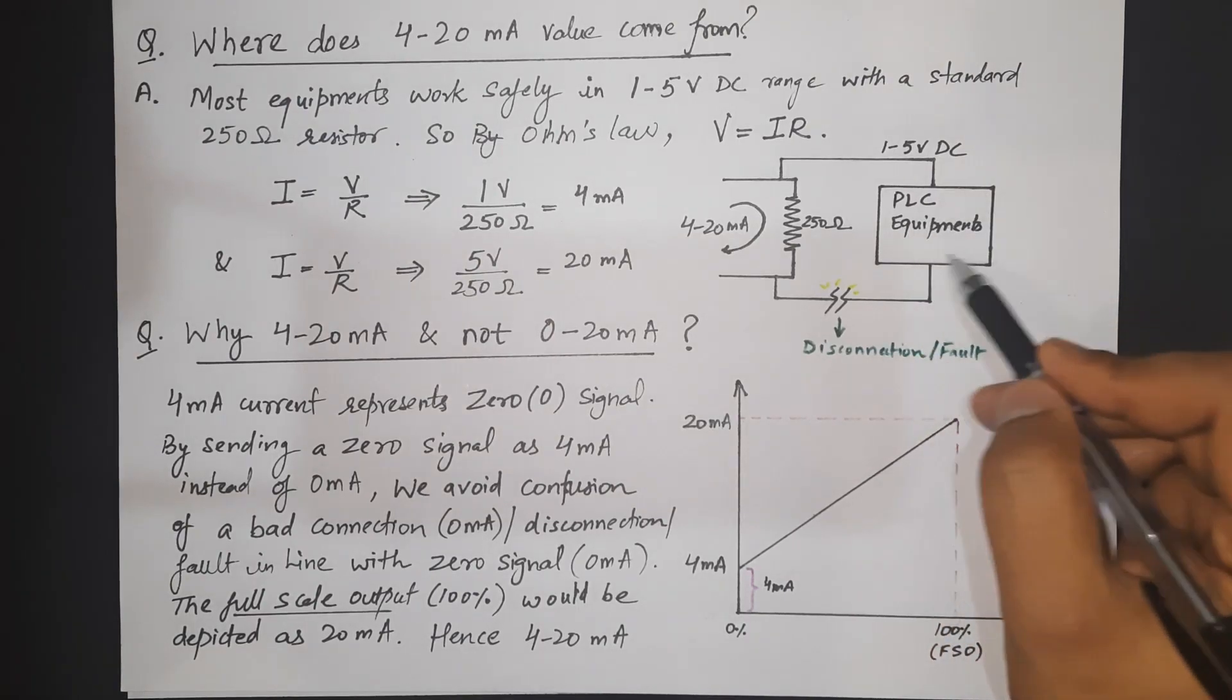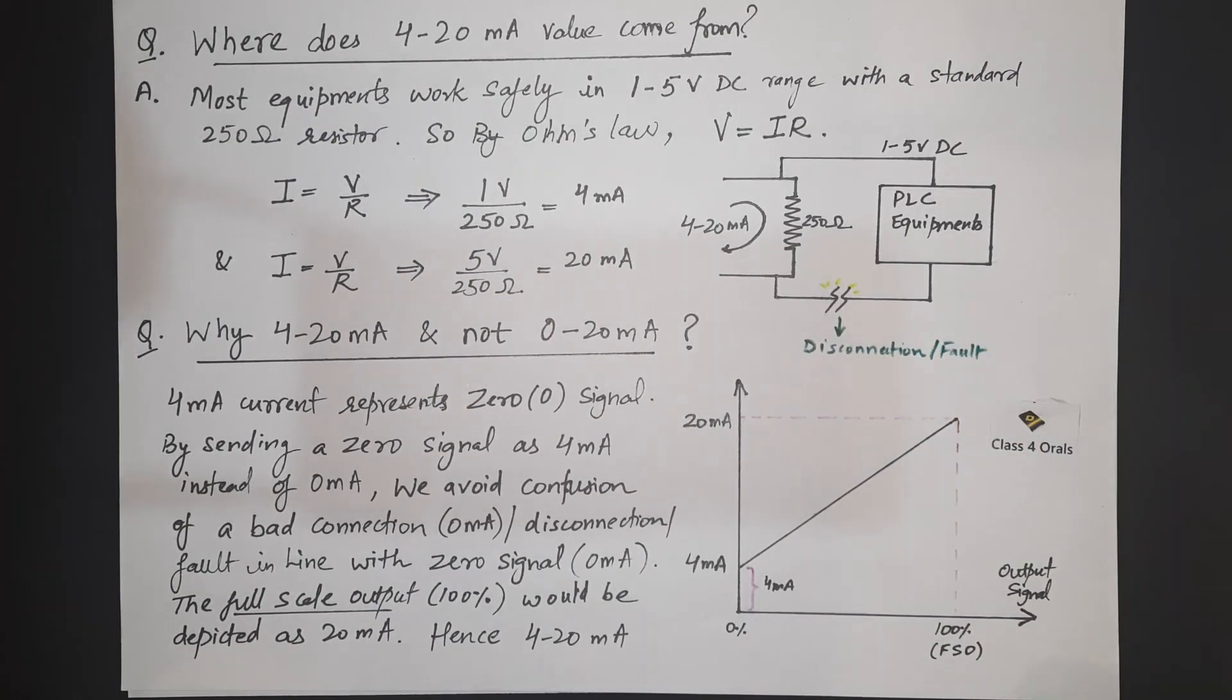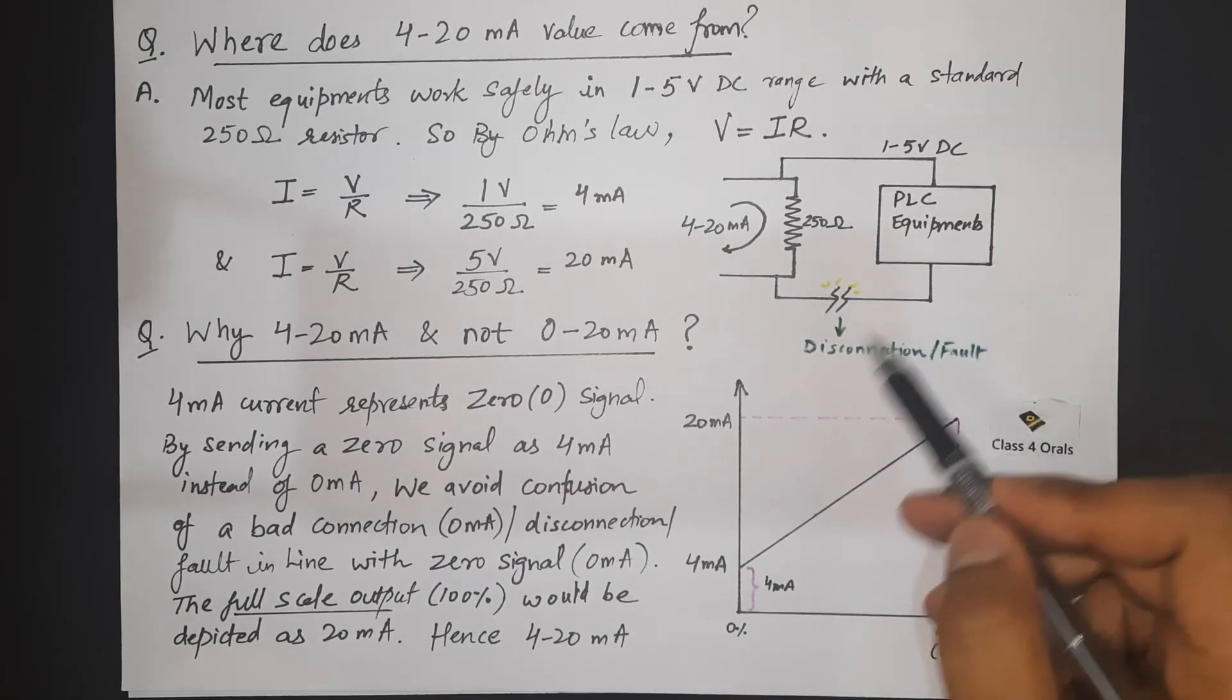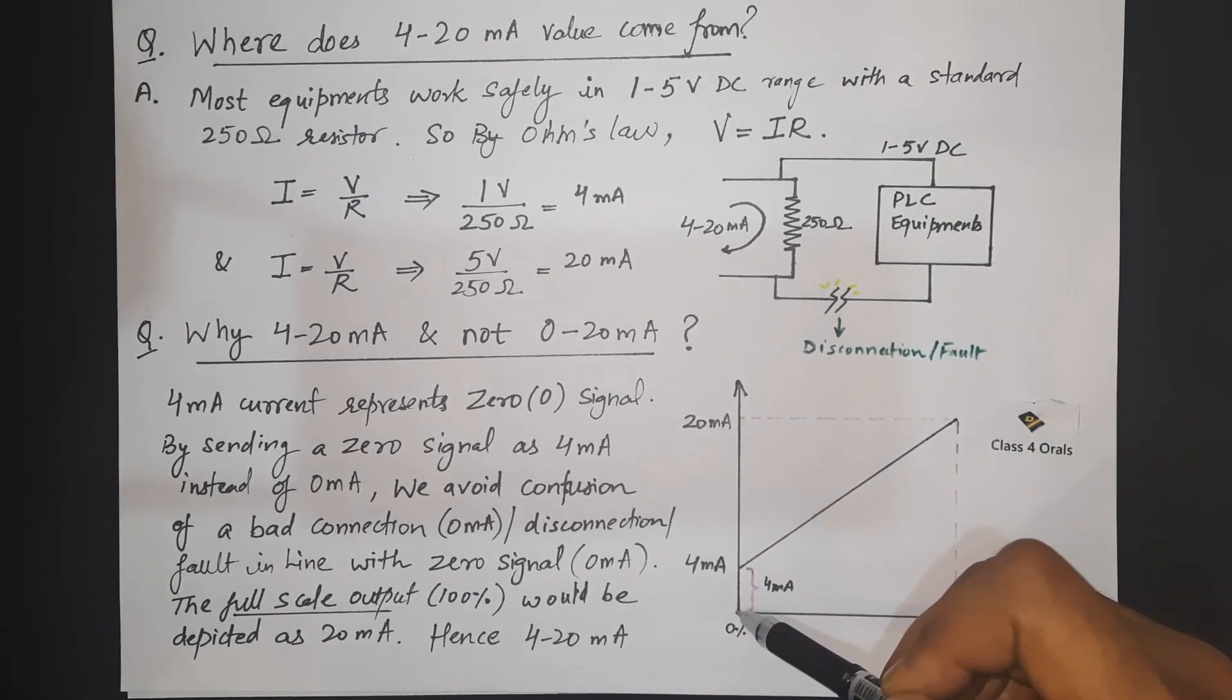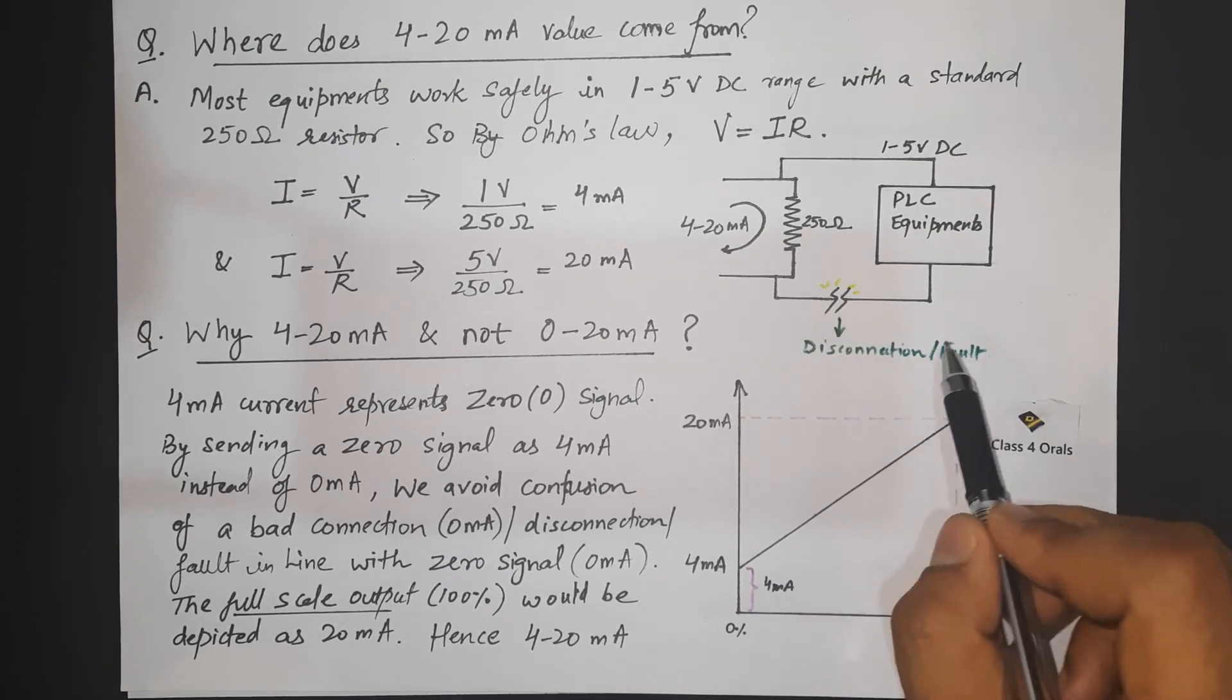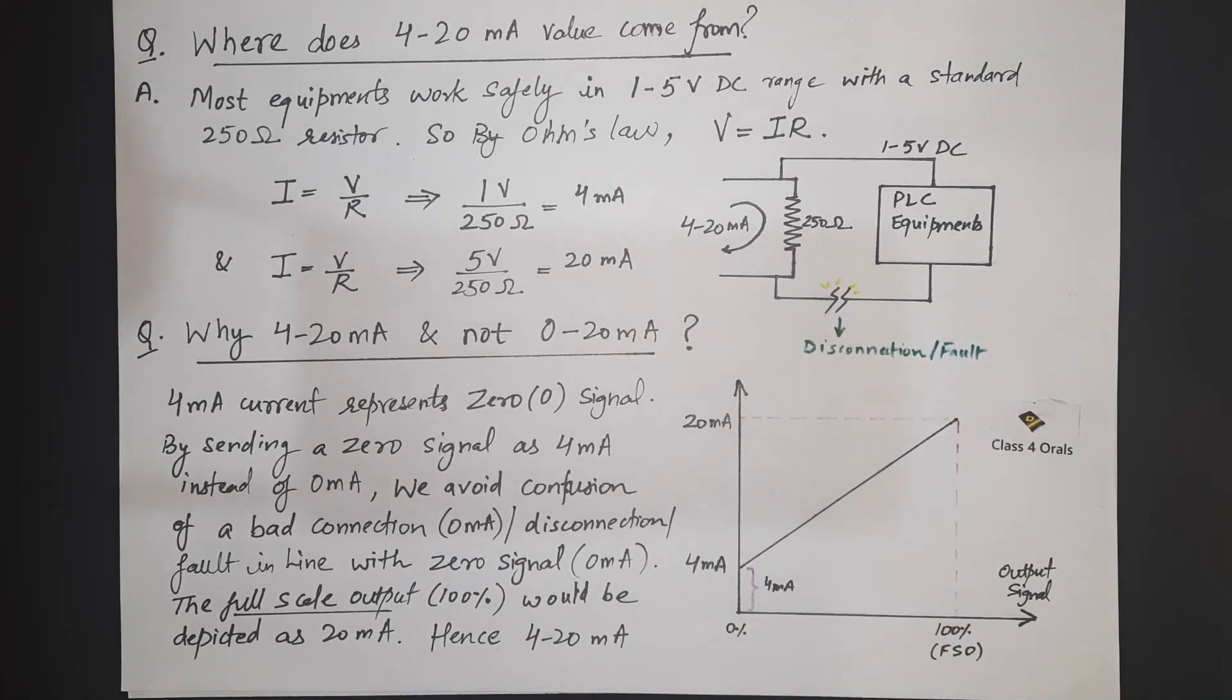When 4 mA will be read here that means there is some problem. Instead of 0 mA we are sending 4 mA that means we are very much sure and confident that there is some fault or disconnection or there is some problem in the line.